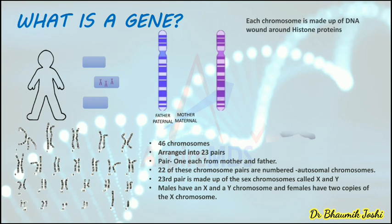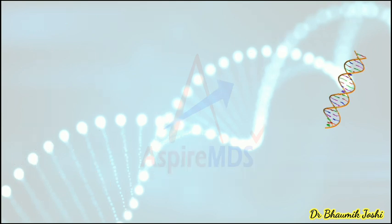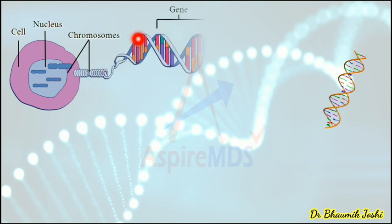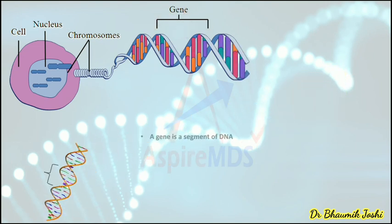This chromosome is made up of DNA. The chromosome is made up of DNA which is wound around a protein called histone — that is the basic structure of the chromosome. The gene we are talking about is a segment of DNA; a part of DNA is acting as a gene.